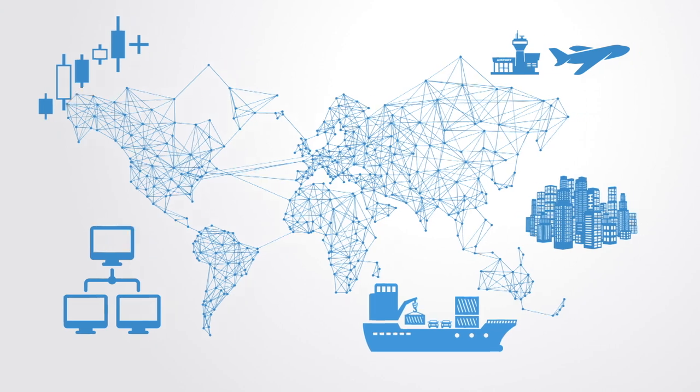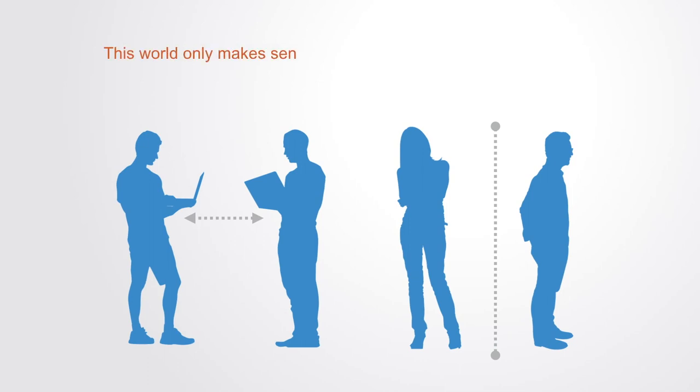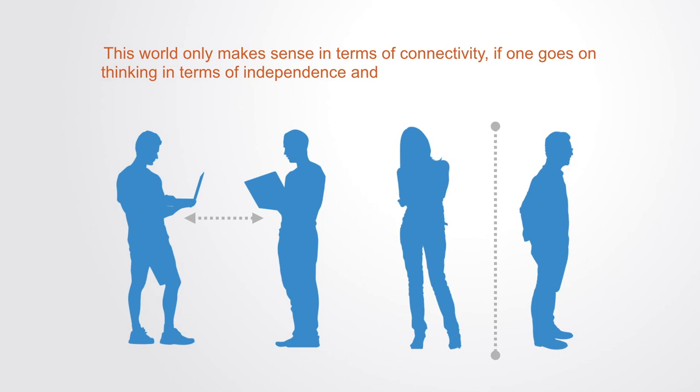Increasingly, what governs our lives is not how we're divided from each other, but in fact how we're connected through these networks. This is not necessarily a good thing or a bad thing, but it is a paradigm shift in that it changes the rules of the game. This world of networks only makes sense in terms of connectivity. If one goes on thinking in terms of independence and borders, things stop adding up and stop making sense.